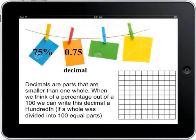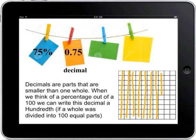As you can see here, decimals are parts that are smaller than one whole. When we think of a percentage out of a hundred, we can write the decimal as a hundredth if a whole was divided into a hundred equal parts. In our grid, we will notice that there is a hundred little squares, and each of those squares represents a hundredth. Since there are 75 out of the hundred colored in, we color in one-tenth, two-tenths, three-tenths, four-tenths, five-tenths, six-tenths, seven-tenths, which gives us our seventy-hundredth, and then we color in five more to give us 75. And we call this seventy-five-hundredth.